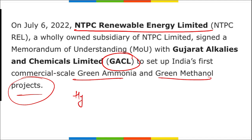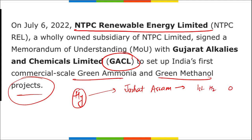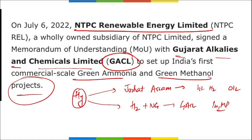Related hydrogen projects to remember: India's first pure green hydrogen plant was set up by OIL in Jorhat, Assam. Hydrogen blending with natural gas was set up by GAIL in Indore, Madhya Pradesh. In summary, GACL and NTPC REL have tied up to establish India's first commercial-scale green ammonia and green methanol project.